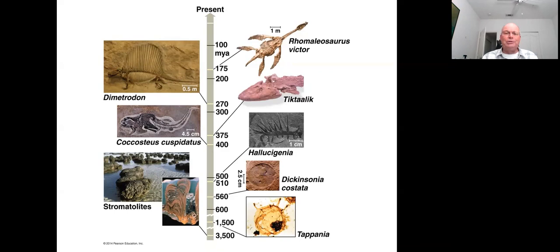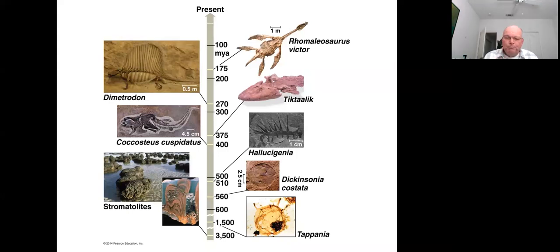The oldest fossil currently absolutely dated dates to 3.48 billion years ago, and it is a cyanobacterial fossil. Then around 1,500 million years ago — about 1.5 billion years ago — we start to see evidence of fossils that resemble eukaryotic cells or the beginnings of eukaryotic cells. We know for sure that around one billion years ago, eukaryotic cells are firmly established.